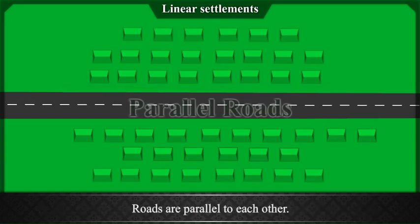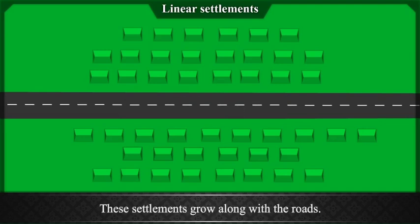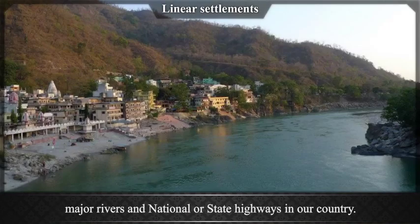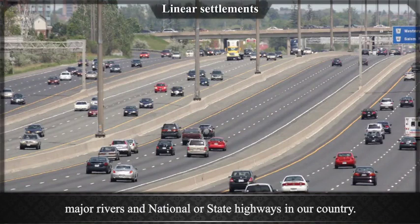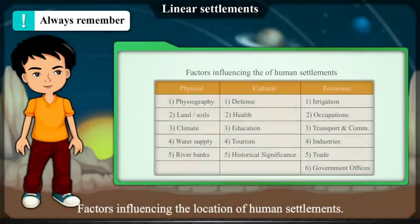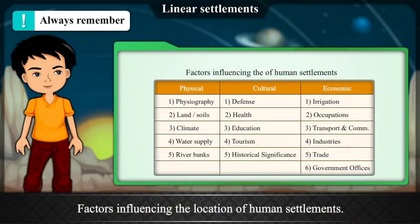Roads in linear settlements are parallel to each other. Besides houses, some shops can be seen too. These settlements grow along with the roads. For example, such settlements are found along coastal tracts, major rivers, and national or state highways in our country. Always remember the factors influencing the location of human settlements.